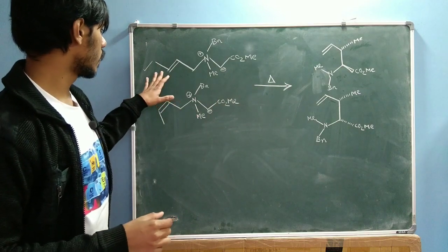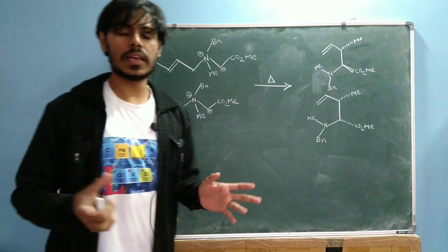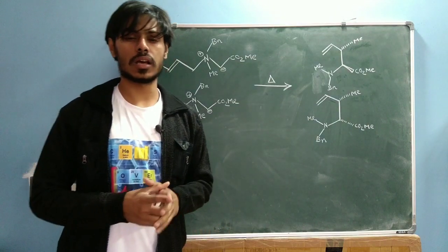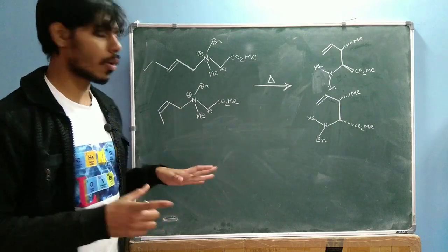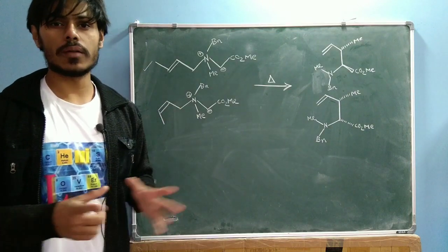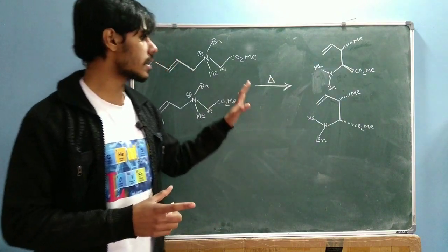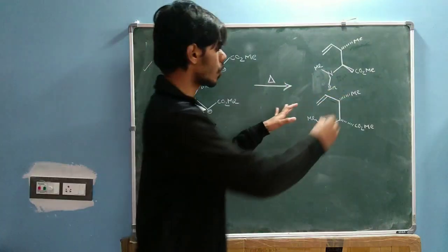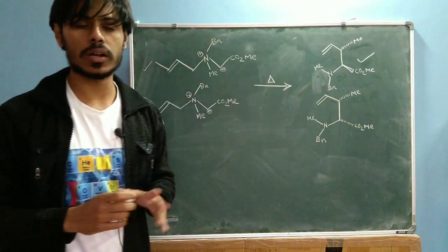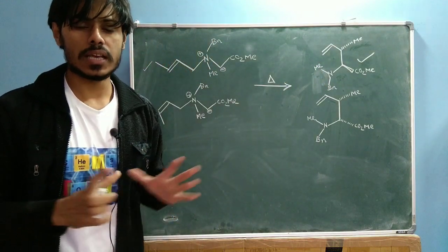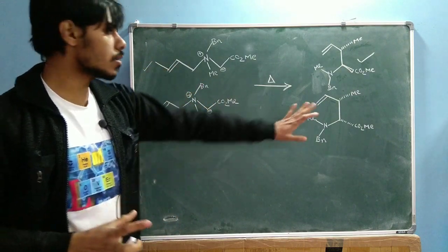So you have to tell whether they will be anti or syn. In the question, the double bond given was a trans double bond, so you might also ask whether the outcome will be the same for a cis double bond or if it will differ. I'll answer all these questions, but first: in this case it will be the anti product which is the major product.